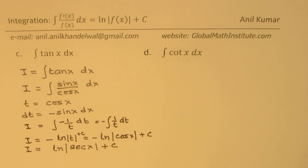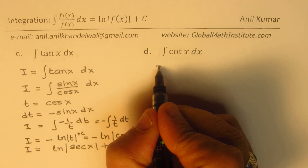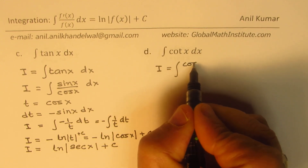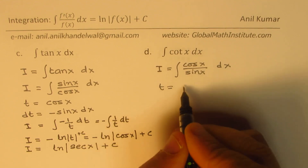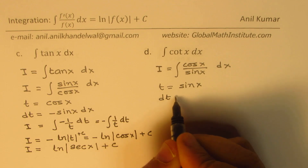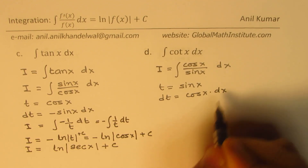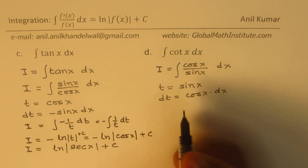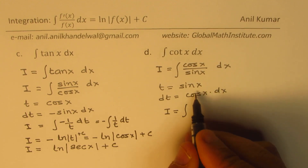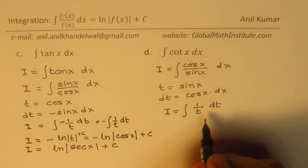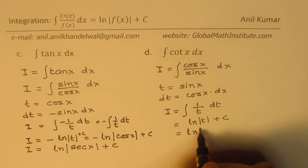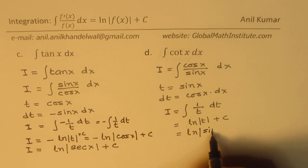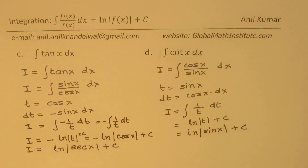For example (d), cotangent x can be written as cos x over sin x. We substitute t = sin x, so dt = cos x dx. The integral becomes ∫(1/t) dt = ln|t| + c. Substituting back, the integral of cot x equals ln|sin x| + c.